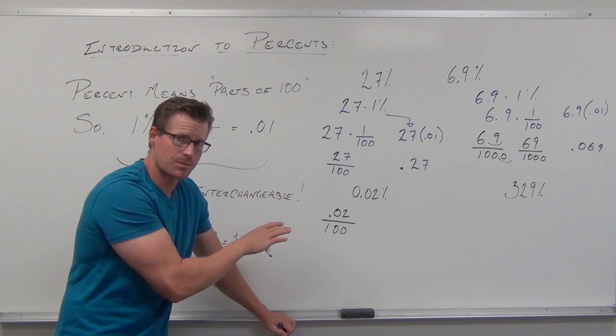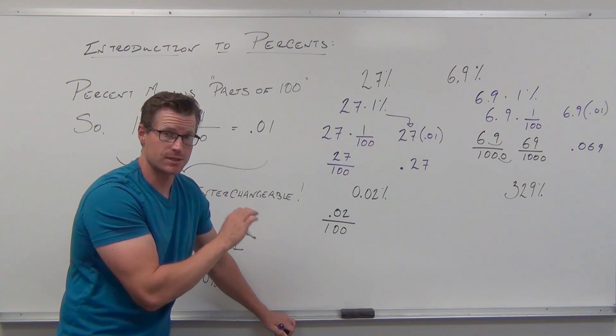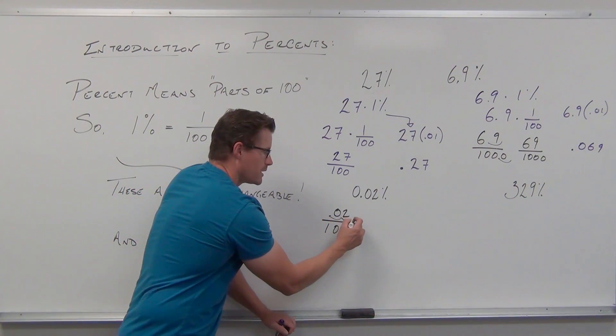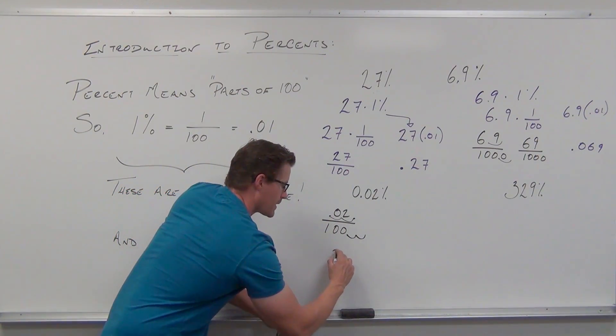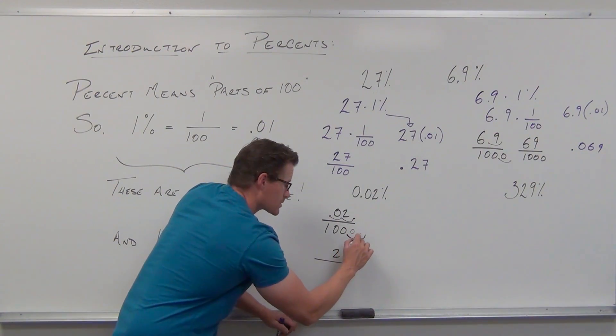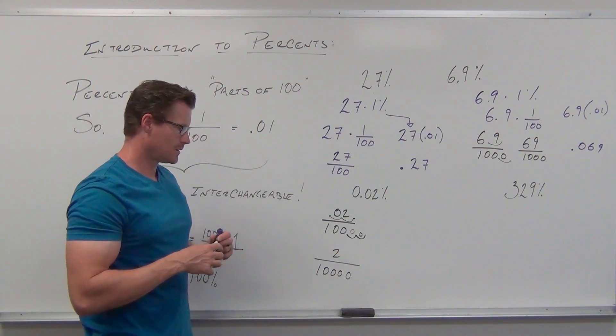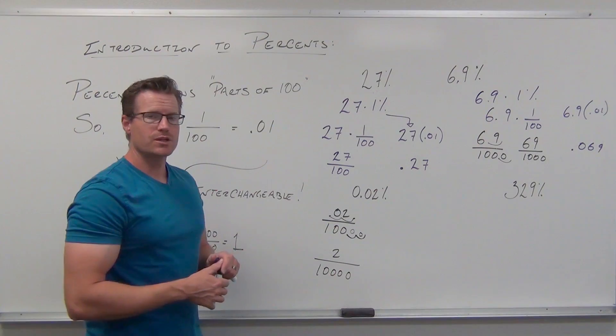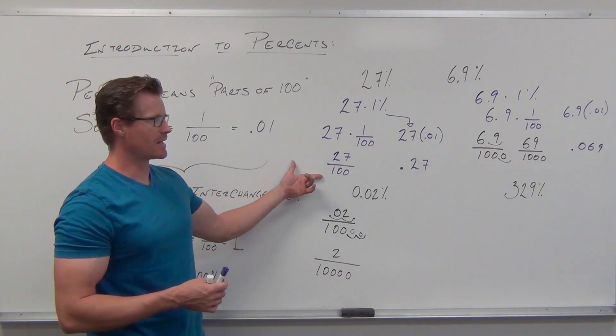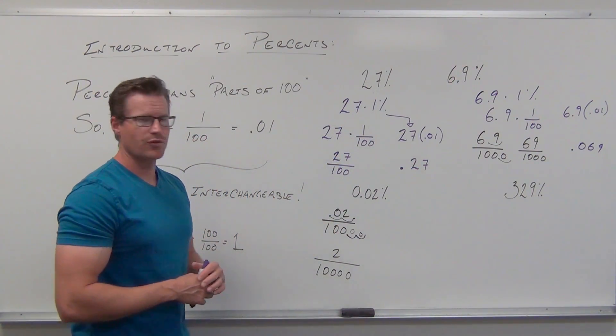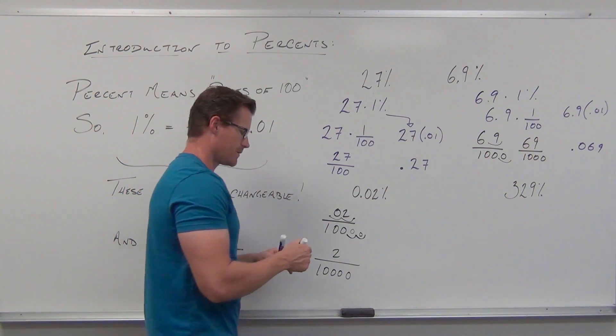How many places would you have to move the only decimal up here in order to get a whole number? However many place values you have to move, do the same thing on the denominator. So, we would have to move two place values. That means that down here, you're going to have to create a decimal to move two place values. 2 over 10,000. Looks good, right? Looks fine. There's only one issue. You need to be able to simplify this. So, we have to simplify 2 out of 10,000. 2 over 10,000 is the same thing as 1 over 5,000. So, divide both numerator and denominator by 2.